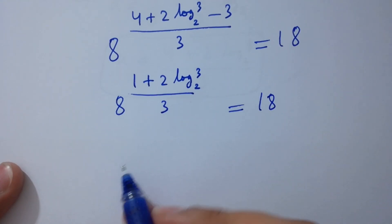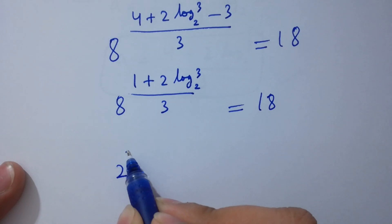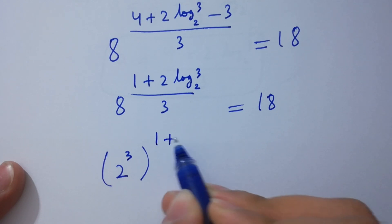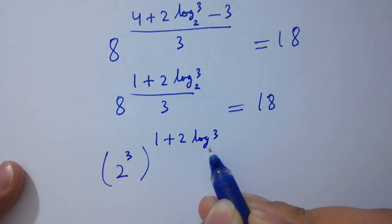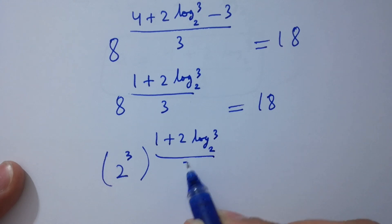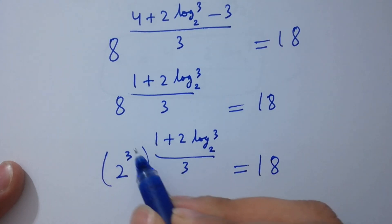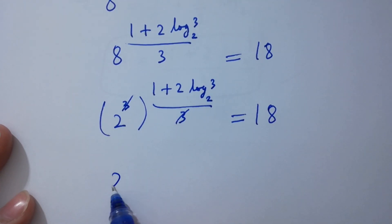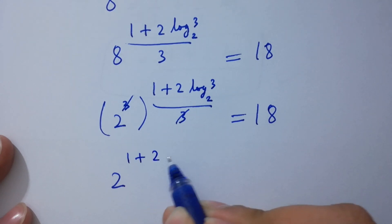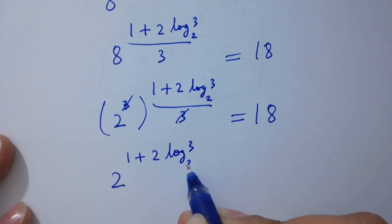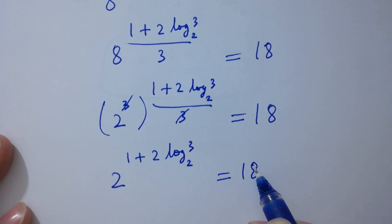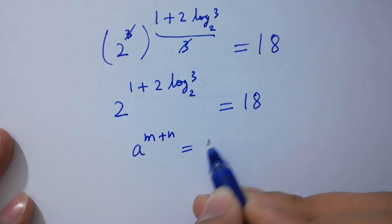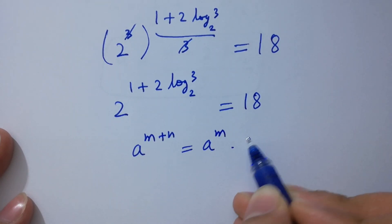Since 8 equals 2 cubed, we have 2 cubed to the power of 1 plus 2 log 3 to the base 2 over 3, equals 18. The 3 and 3 cancel, giving us 2 to the power of 1 plus 2 log 3 to the base 2. Using a to the power m plus n equals a to the power m times a to the power n,